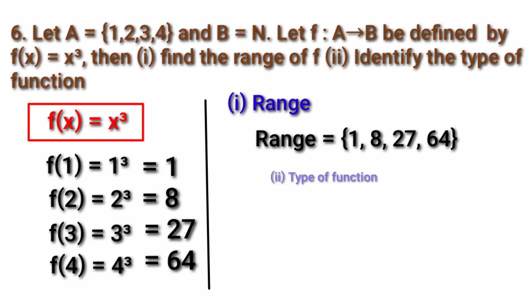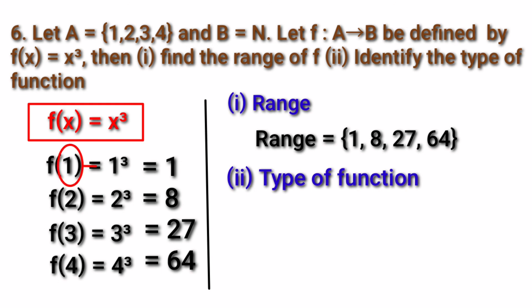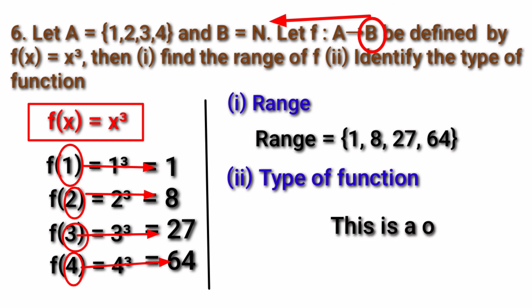Second subdivision: identify the type of function. For 1 the answer is 1, for 2 the answer is 8, for 3 it is 27, for 4 it is 64. All four values give different images in B, so this is a one-one function. To check whether it is onto, we look at the second set B, which is ℕ. For other numbers in ℕ there are no pre-images, so we can't say that it is an onto function. This is only a one-one function.